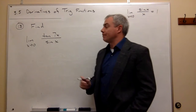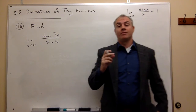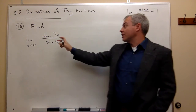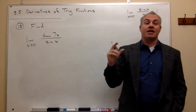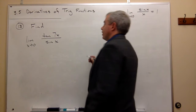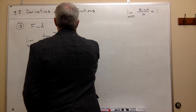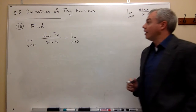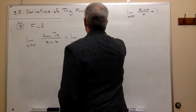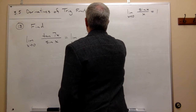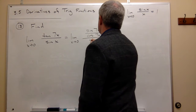Right now we have a tangent up here, and tangent is not that easy to work with in this type of problem. So typically what we want to do is transform that tangent into sines and cosines. So we can rewrite this as the limit as x goes to zero of sine of 7x divided by cosine of 7x, all divided by sine of x.